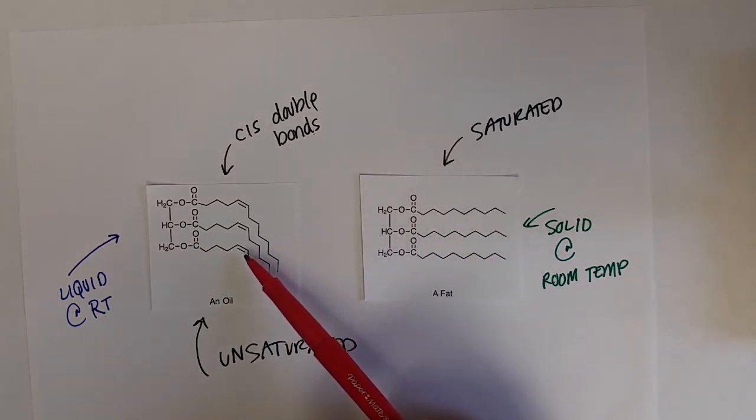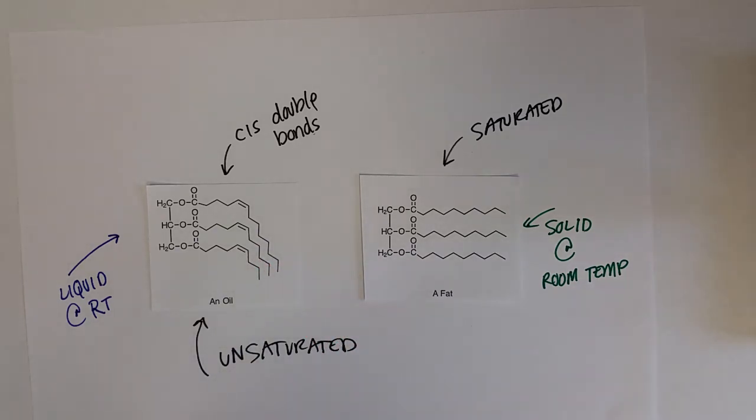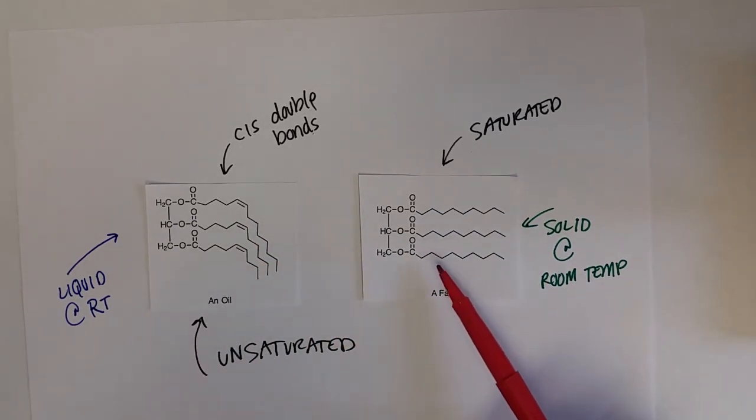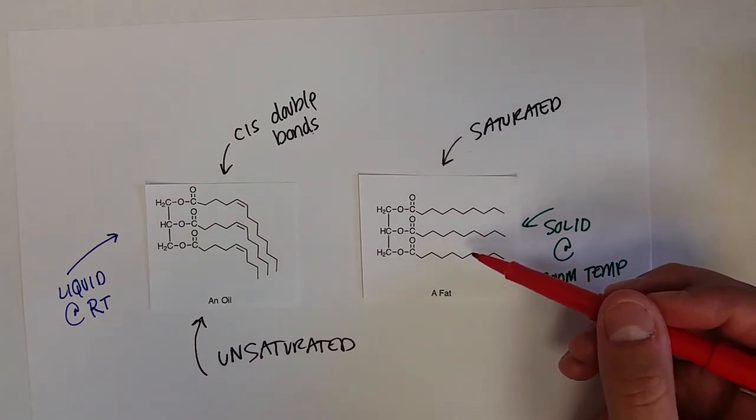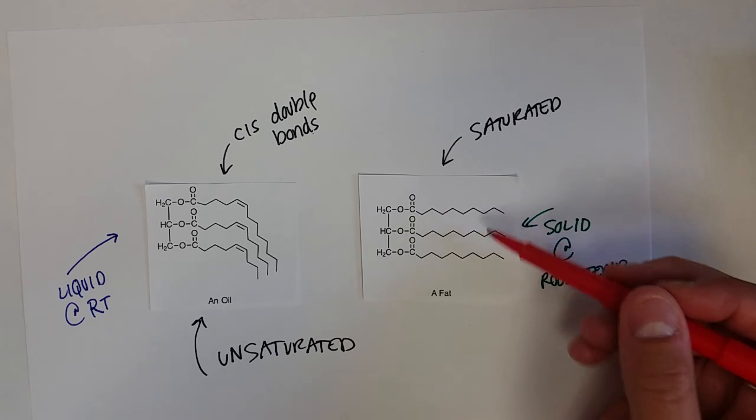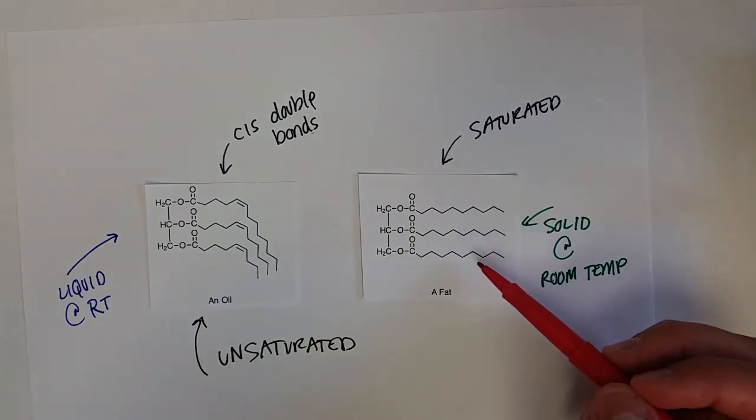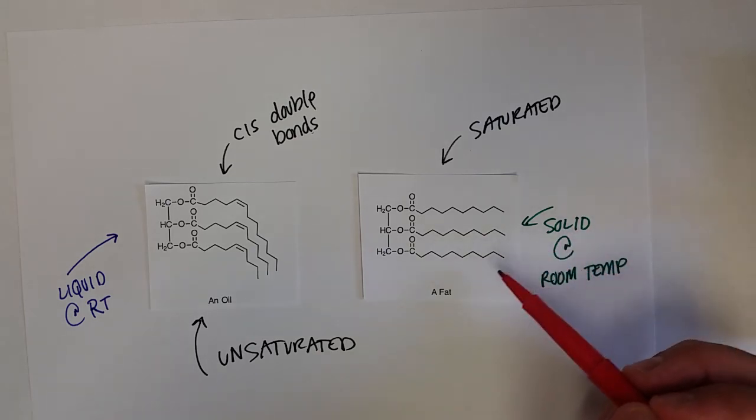The double bond on this oil causes a kink in the hydrocarbon chain, whereas the saturated hydrocarbons are pretty much a straight chain. The triacylglycerides for fats are able to stack up and their dispersion forces make better connections between them, increasing the strength of their intermolecular forces, which takes more energy to melt them, so it keeps them as a solid at room temperature.